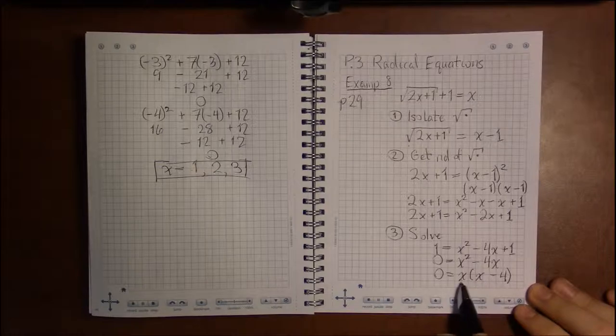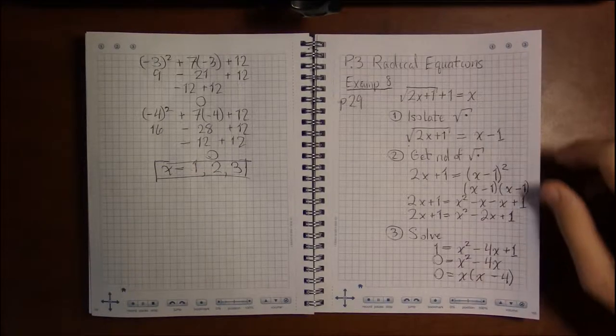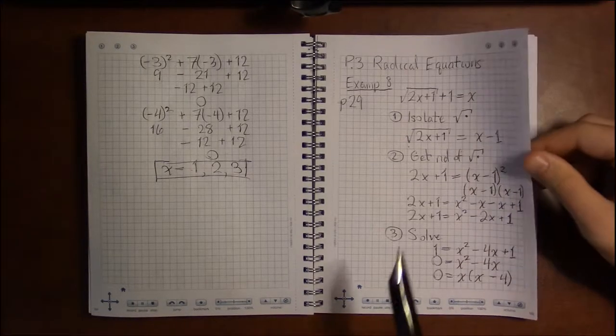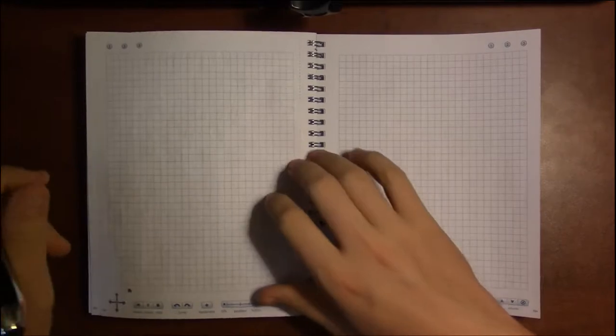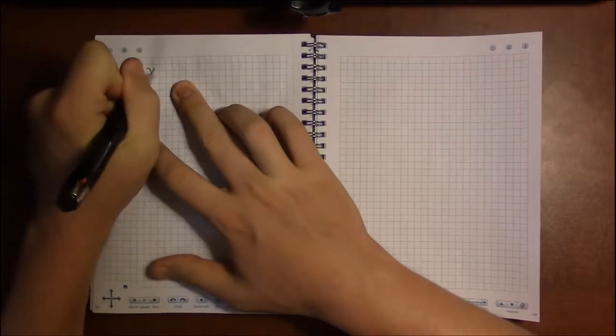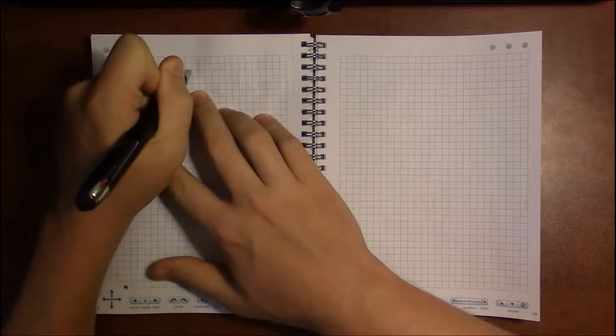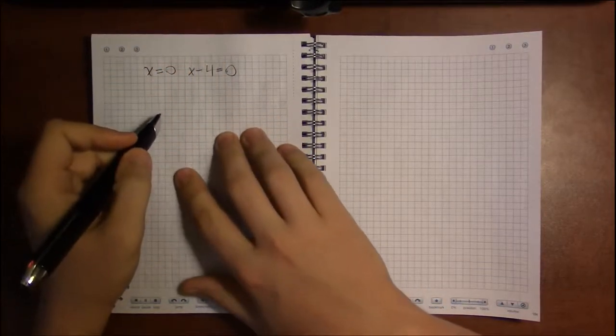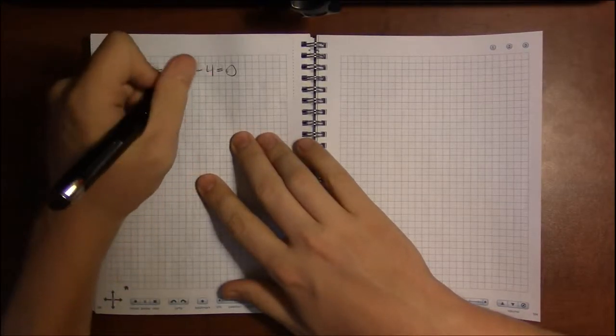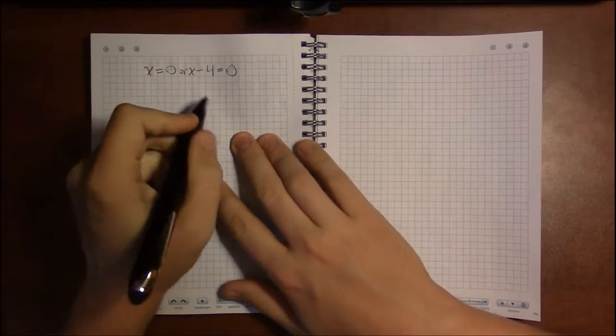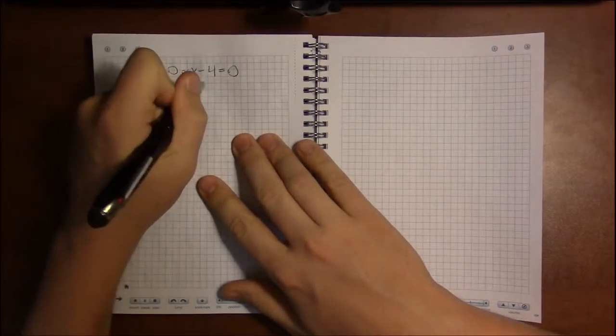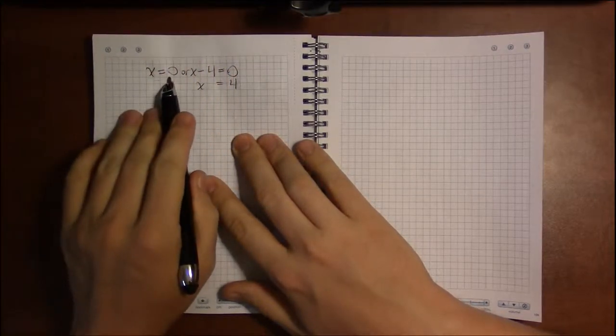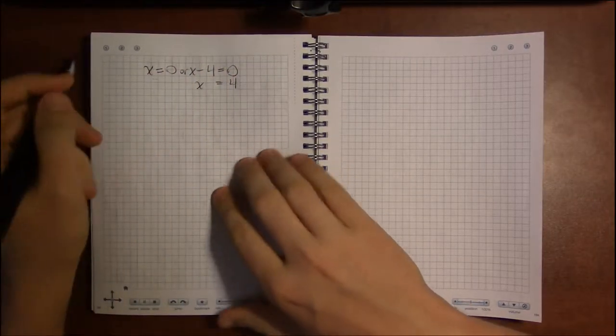So with quadratics, once we have them factored, we set each factor equal to 0. So we have x equals 0, and then x minus 4 equals 0. So this first equation is solved. And in the second equation, all we have to do is add 4 to both sides. So our solutions are x equals 0 or x equals 4.